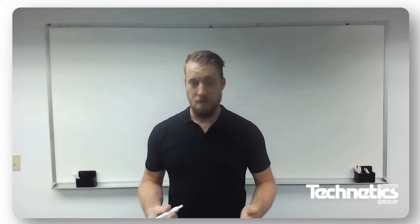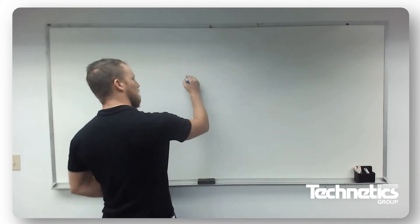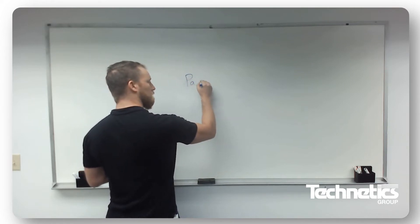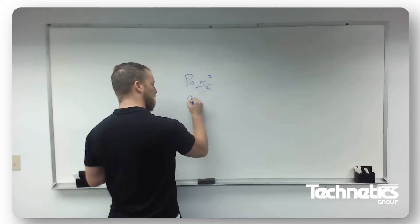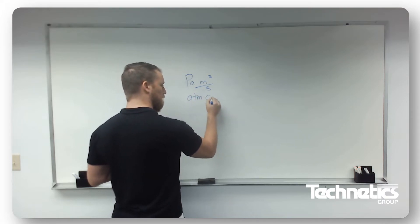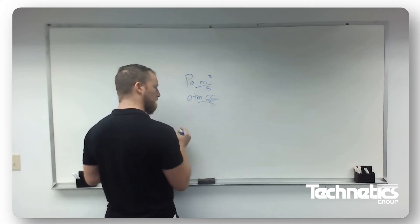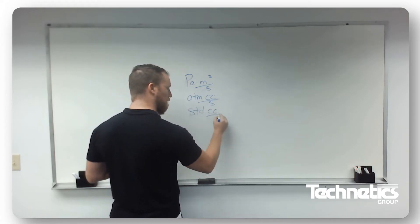Now, understanding leak rates, we need to start with talking about the units, because they're not exactly straightforward. So some of the common units that we see are the Pascal meter cubed per second. Another very common unit is atmosphere cubic centimeter or cc per second. And then we also have standard cc per second.